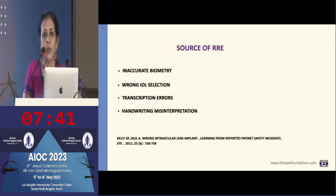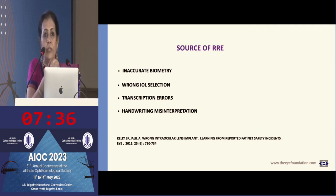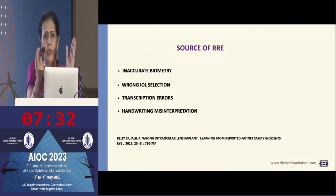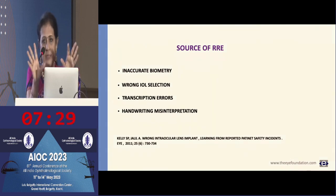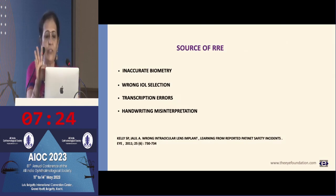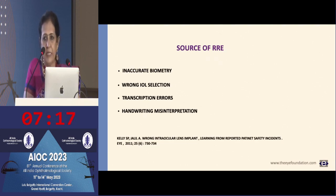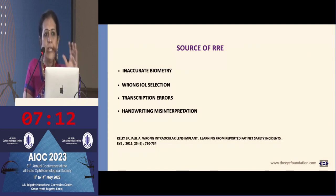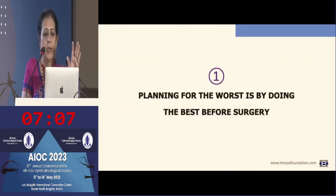The sources of these residual refractive errors — in a study done in Wales from 2003 to 2010, in that huge number of eyes, only 164 had issues. The four main reasons outlined were: inaccurate biometry, wrong IOL power selection, transcription errors, and handwriting misinterpretation. You realize so much of it is in your hands, and the need to be preoperatively conscious cannot be undermined at all.